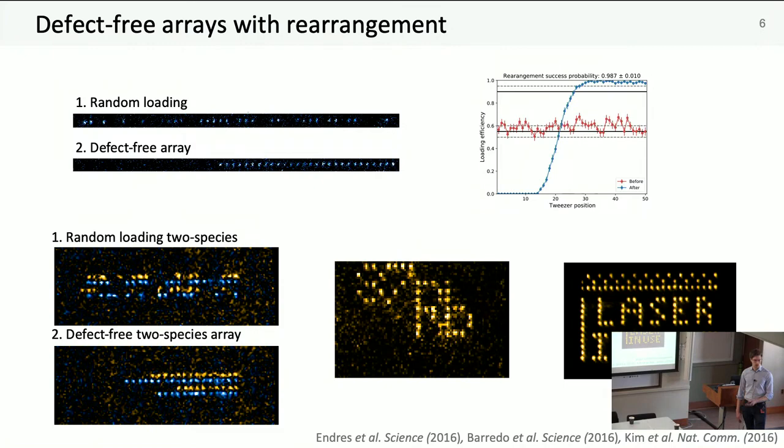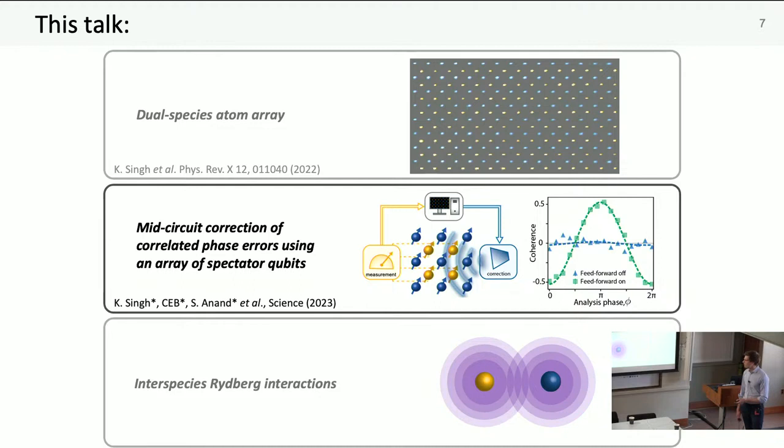This is just atoms, so what I want to come on to now is quantum information and how we can start to encode states in the system and manipulate them. I'm going to talk about this spectator protocol, how we implemented that in our system, but I want to start by introducing the protocol itself.